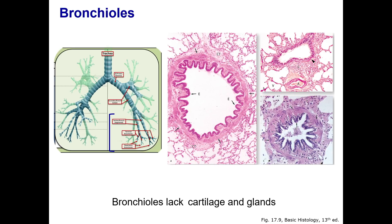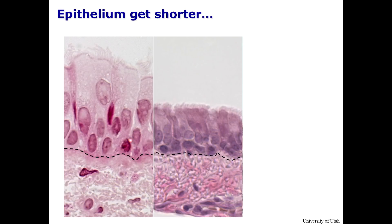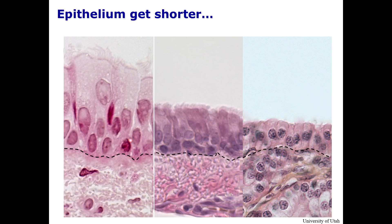Bronchioles are where the mucociliary escalator begins. These histological sections show the progressive changes in the epithelium: from respiratory epithelium with numerous cilia, to shorter simple columnar with shorter and fewer cilia, to even shorter simple columnar epithelium lacking cilia.